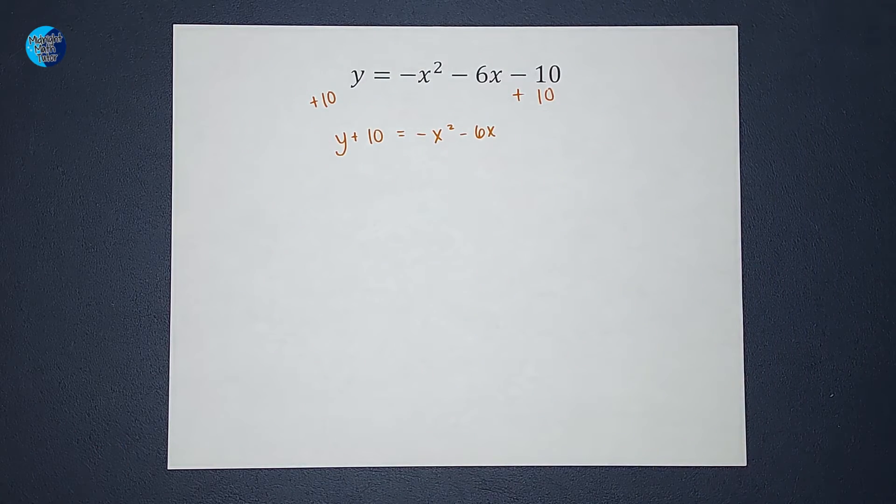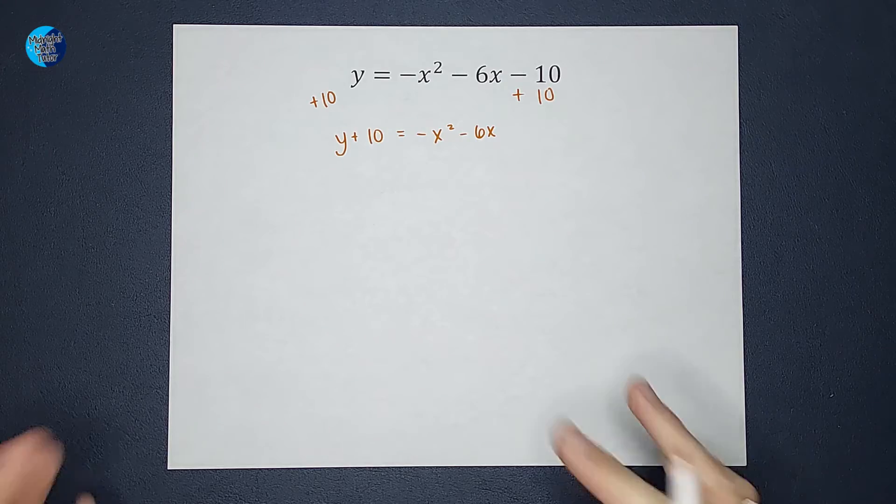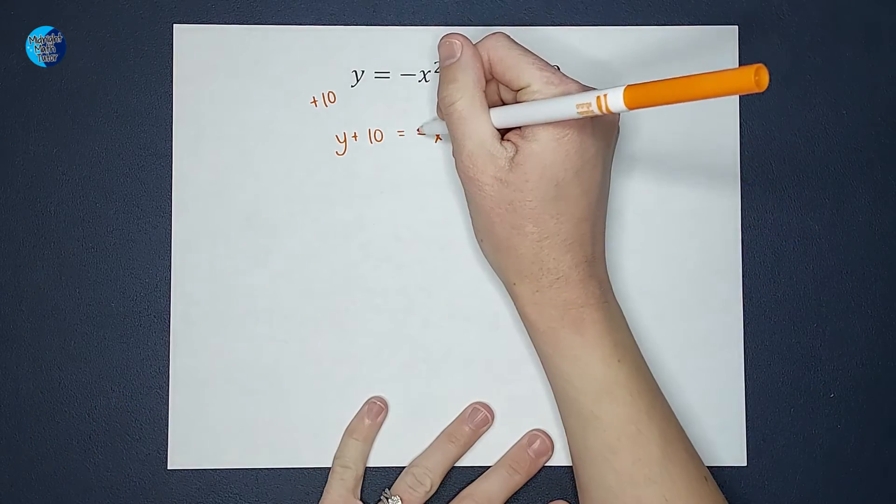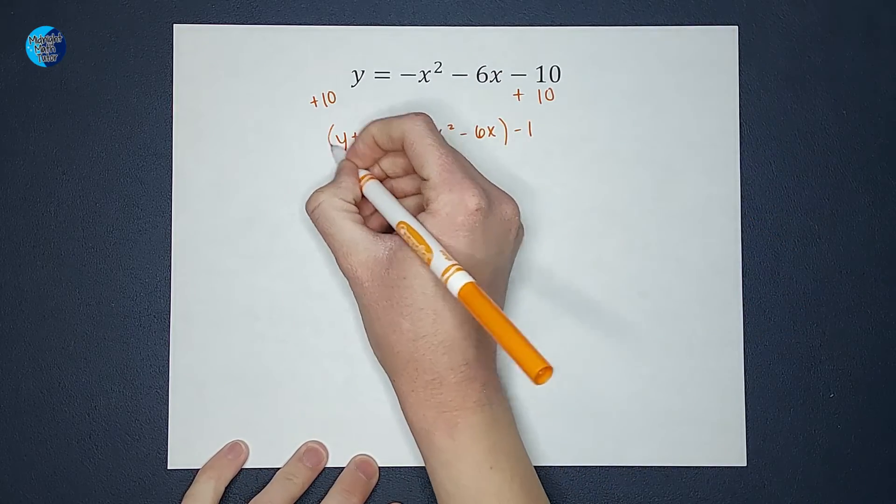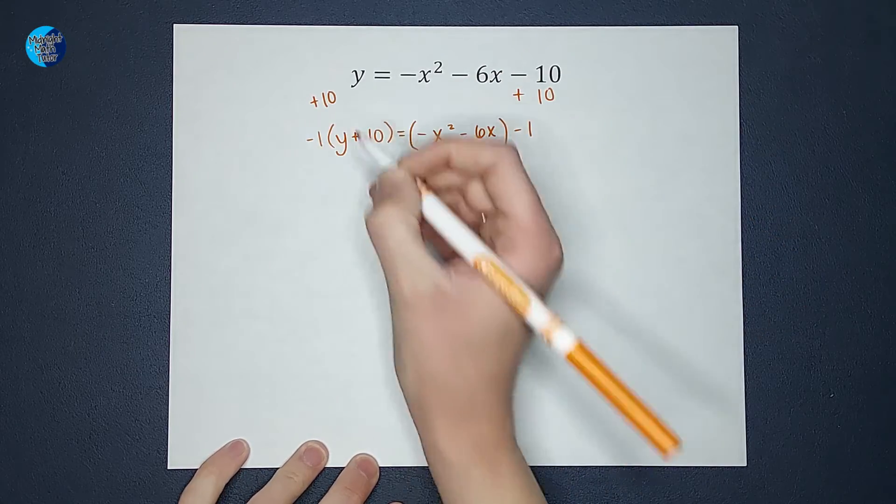I don't want my x squared to be negative right now. So I am going to multiply both sides by a negative one. I just don't want to have to deal with it right now when I'm completing the square.